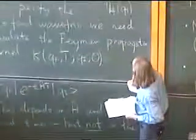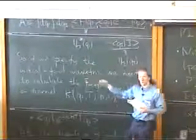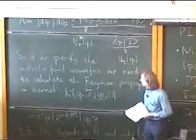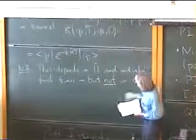Because they're all encoded in these wave functions here. So to calculate the whole amplitude, of course, you need to know these. But this bit in the middle, this Feynman propagator, we don't need to know these. So this is very general.